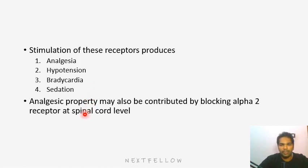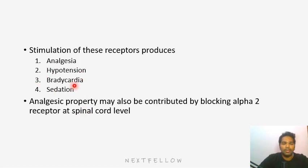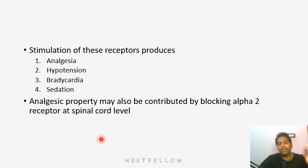This nucleus is responsible for arousal and vigilance, so when you suppress it, the patient will naturally become more docile and will sleep. Analgesia is also one of the functions. The analgesic property not only depends mainly on the central sympathetic outflow — it also depends upon the spinal cord receptors. The same alpha-2 receptors will act on the spinal cord as well. That is how this drug produces analgesia.